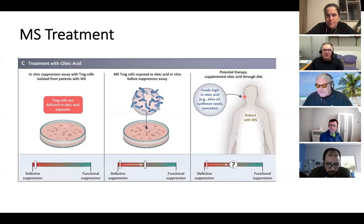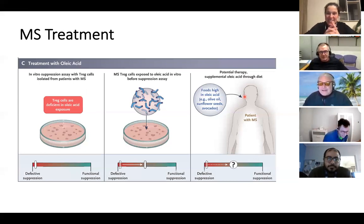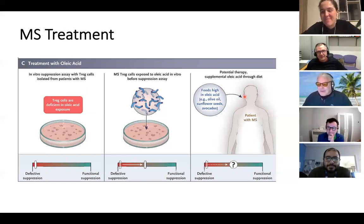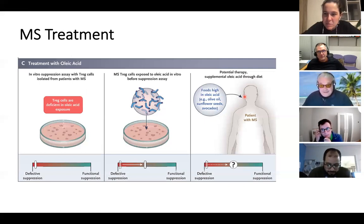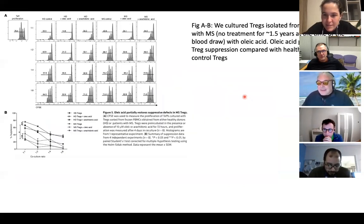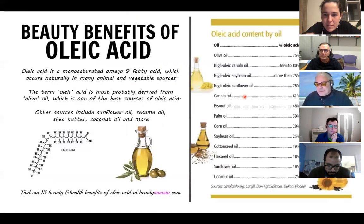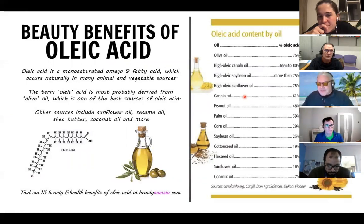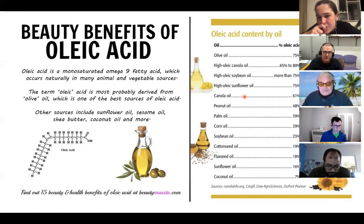The conversation ends with the suggestion that the next journal club topic could be lipoic acid metabolism, since the MS Society identified lipoic acid as the number one hit in a search for treatments for progressive MS. The biology behind lipoic acid is described as very interesting, and it's likely to be more in the news.